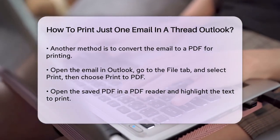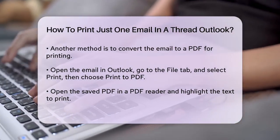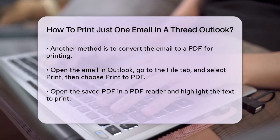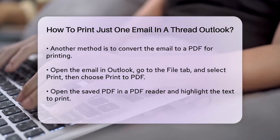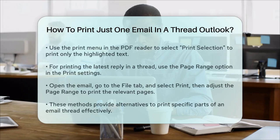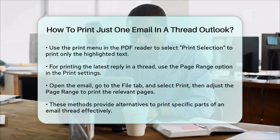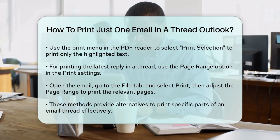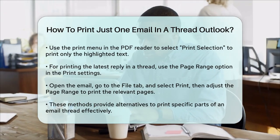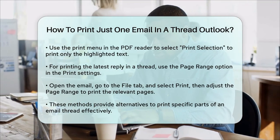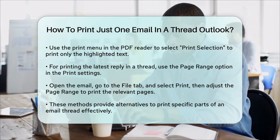If you only need to print the latest reply in a long email thread, you can use the Page Range option, although this is not as precise. Open the email in Outlook, go to the File tab, and select Print. In the Print options, use the Page Range settings to print only the first page or a specific page range that contains the latest reply.